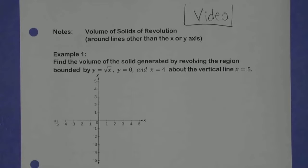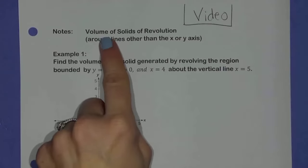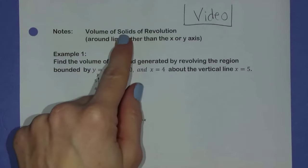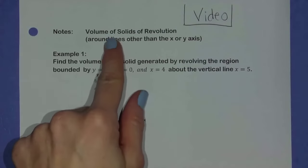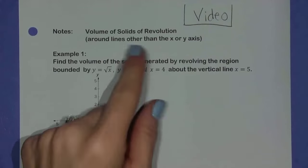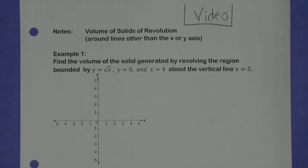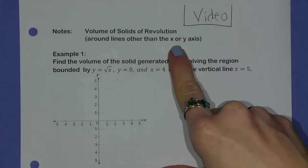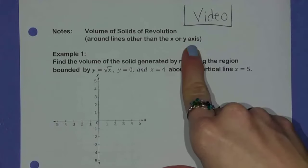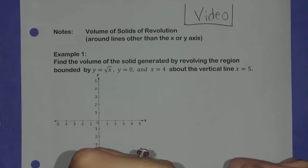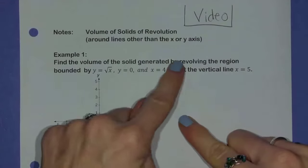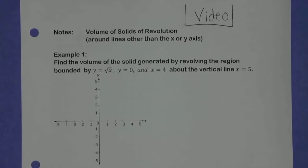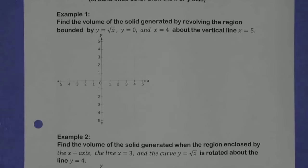Hi everyone, and thanks for tuning in to our notes video on volume of solids of revolution. We've been working on this, but today we're going to spin areas around lines other than the x or y axis. So up until now, we've just been spinning around the x or y axis and using either disks or washers to find our volume. We're going to stick with disks and washers, but spin around other types of lines, both horizontal and vertical. I've got three examples today, and we're just going to start right in with our first example.